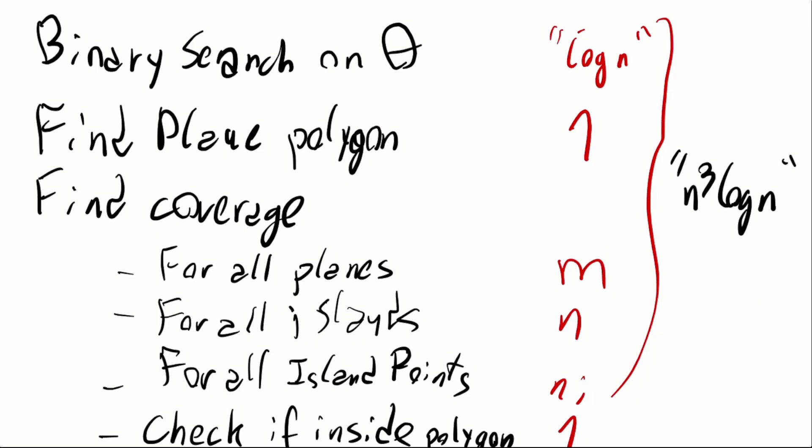Now we can find the coverage of the islands. For each of the planes that we have and for each of the islands, we can check that this island is fully covered by this plane by checking all the points. For each of these points, we can check that this point is inside the trajectory polygon. So the full solution has a complexity of n squared log n.